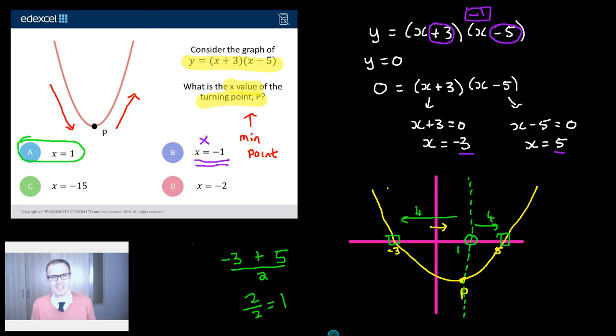Minus 15. Minus 15 is an interesting one. It's not the right answer but it is something on this graph. Any idea what? Minus 15? Well look think what happens if you expand these brackets. You're going to get an x squared. You're going to get a 3x. You're going to get a minus 5x. What else are you going to get? You're going to get a 3 times minus 5 which is minus 15.